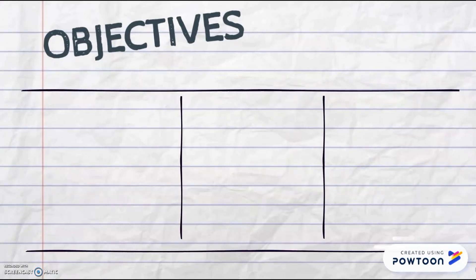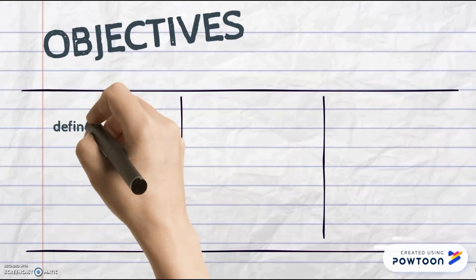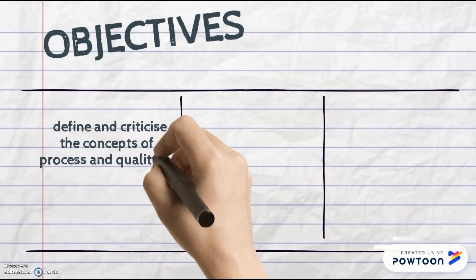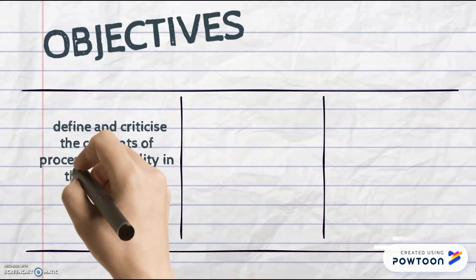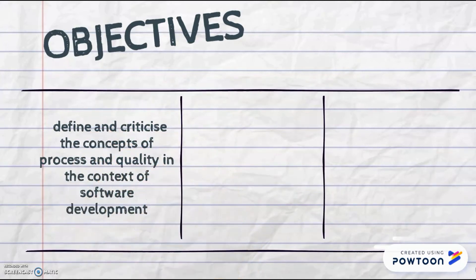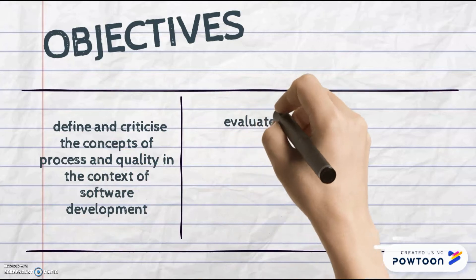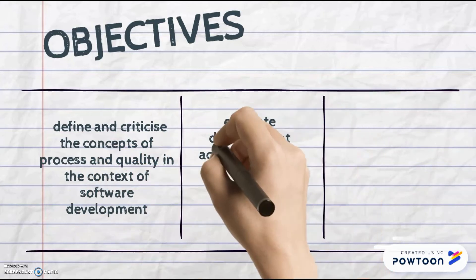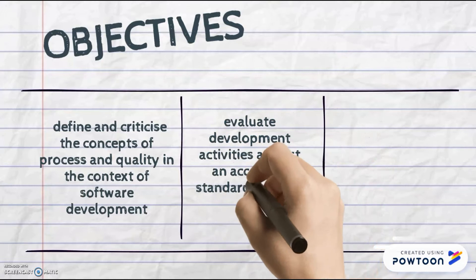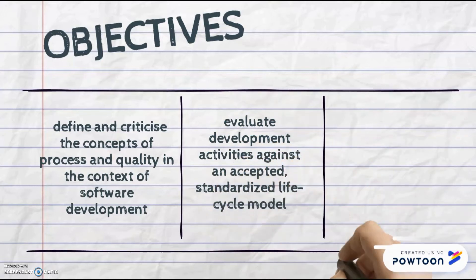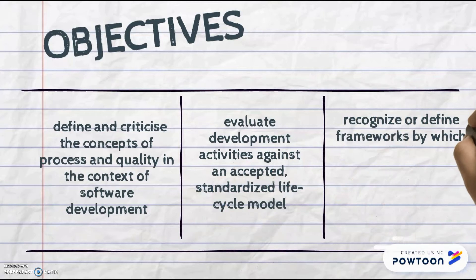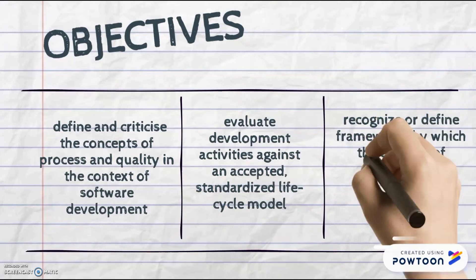Here are the objectives of process quality. The objectives are to define and critically examine the concepts of process and quality in the context of software development, evaluate development activities against an accepted standardized life cycle model, and recognize the framework by which the delivery of quality can be made the focus of an organization.